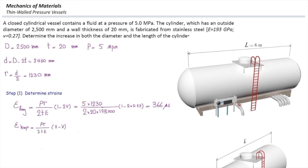We need to determine that. So that would be PR over 2TE multiplied by 2 minus nu. And then I'm going to plug the values. And that would be 1,378 microepsilon.